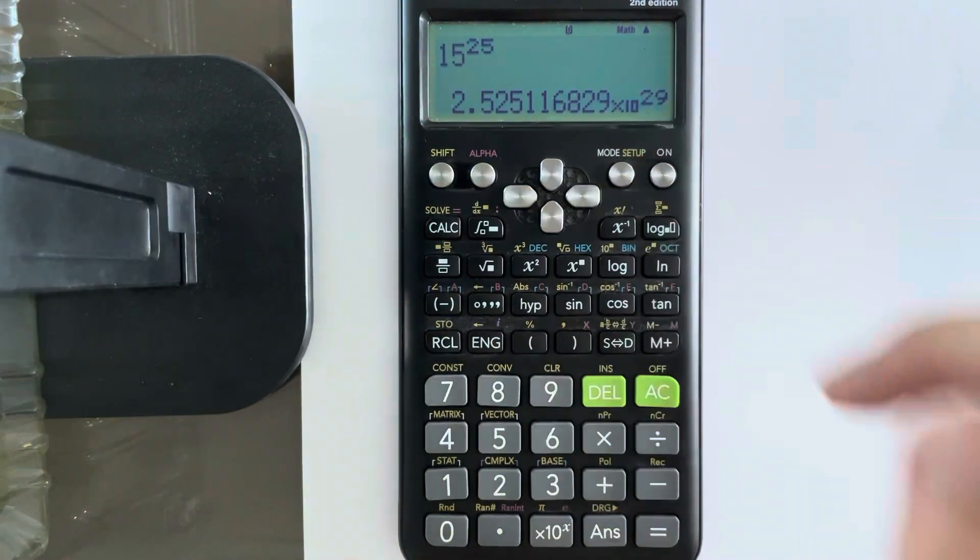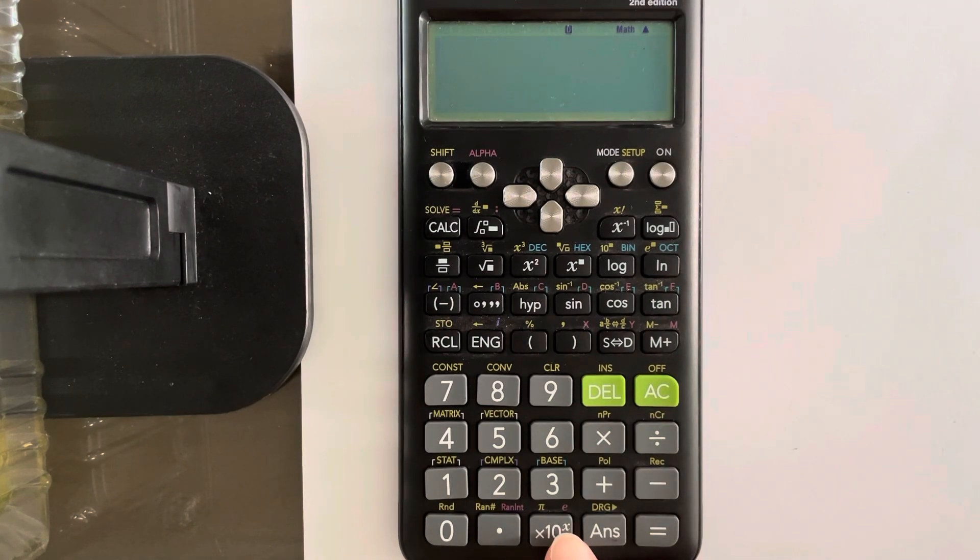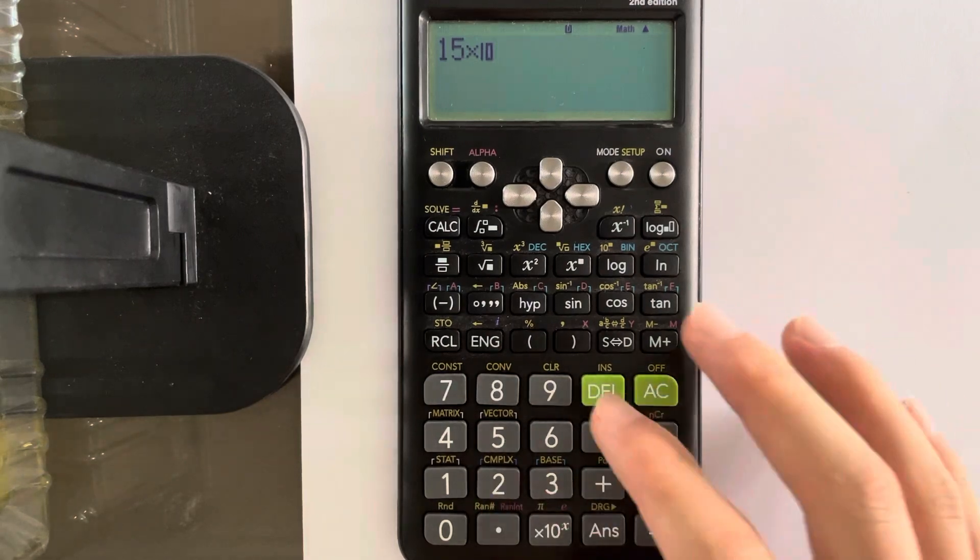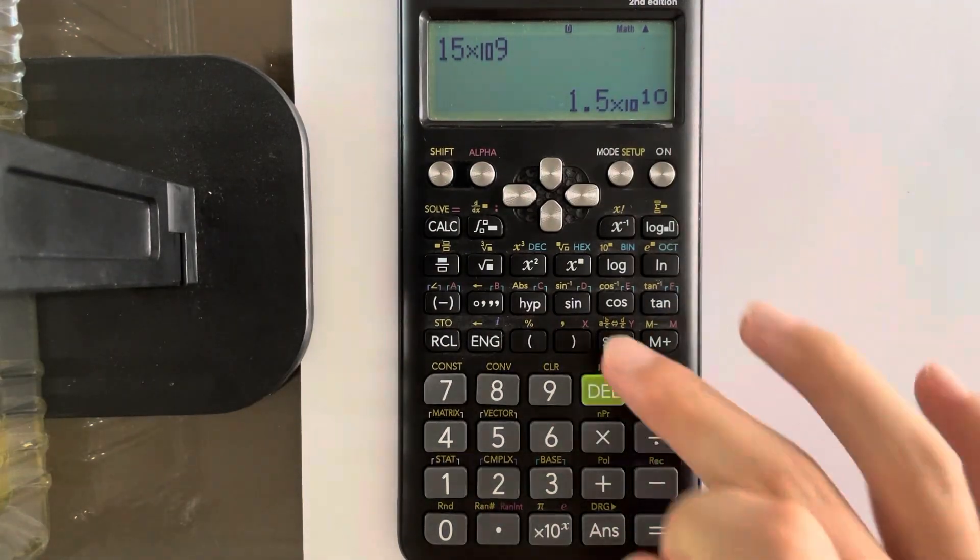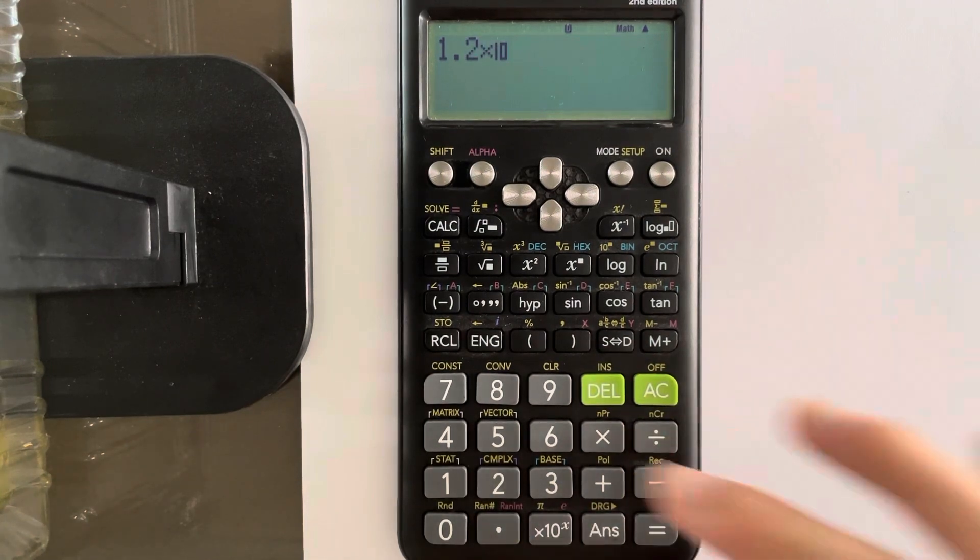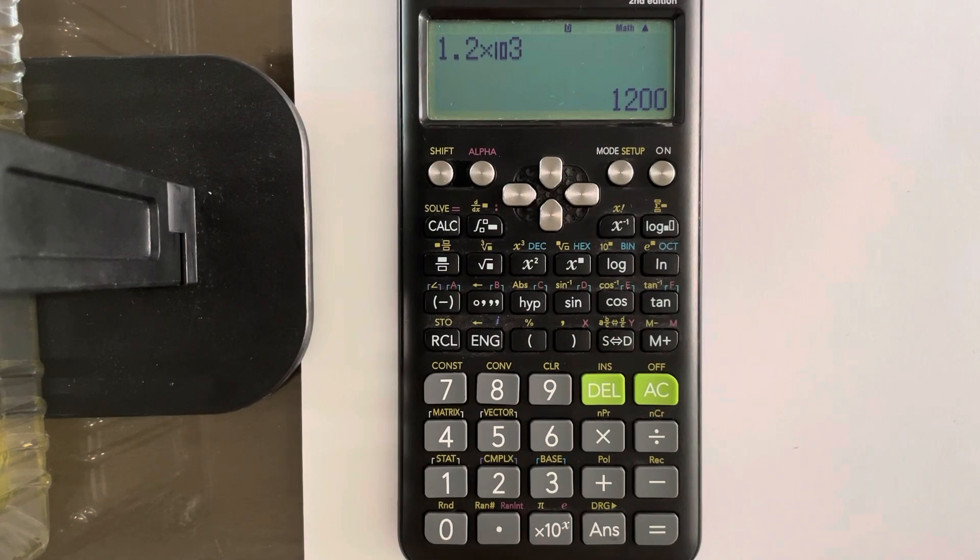Now this is in standard form, right? Speaking about standard form, how do you access standard form? There's an x10 to the power of x button here. So 15 to the power of, multiply by 10 to the power of 9. That'll give you that. But the number's too big. So let's try 1.2 to the power of 3. But that'll give you the answer as a proper digit.